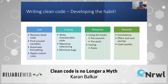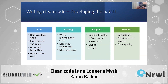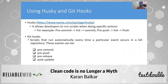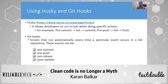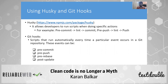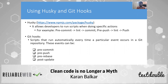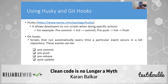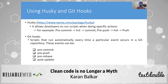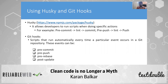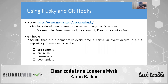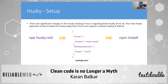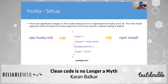The first step in developing this habit is using Husky and githooks. Husky is a popular NPM package that allows developers to run scripts when doing specific actions, and these actions can be in the form of githooks. Githooks are scripts that run against a particular event in a git repository — for example, pre-commit or pre-push. To install Husky, one needs to run a simple command: NPX Husky init. This injects a prepare script in your package.json and installs the dependency. I recommend using the latest version of Husky.